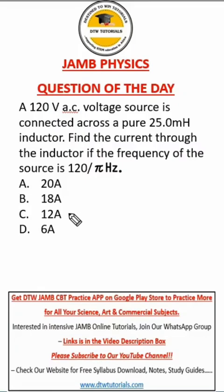Okay, welcome to DTW Tutorials. Now look at this JAMB physics question. It says a 120 volt AC voltage source is connected across a pure 25 millihenry inductor. Can you see that millihenry? I hope you take note of that millihenry, it means we have to convert this value.